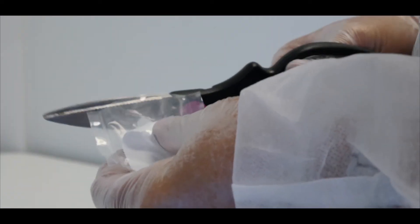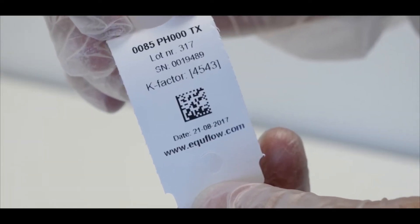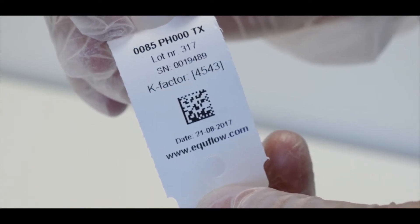The manufacturing data are provided on the label of the flow tube, such as the lot number and serial number. Additionally, the calibration data are saved in a two-dimensional barcode.